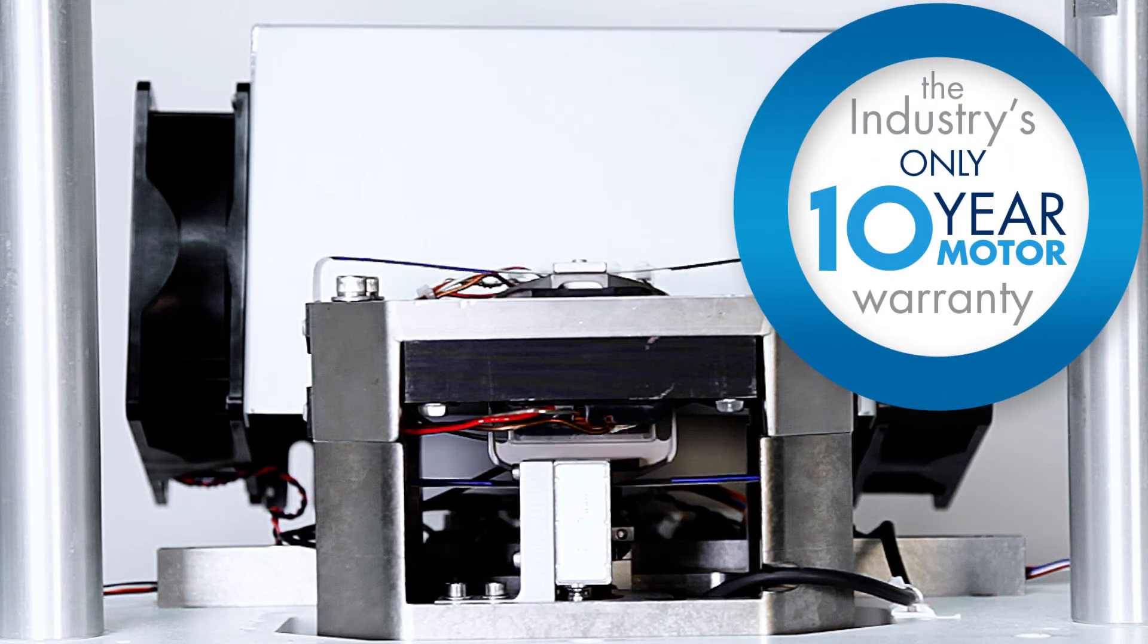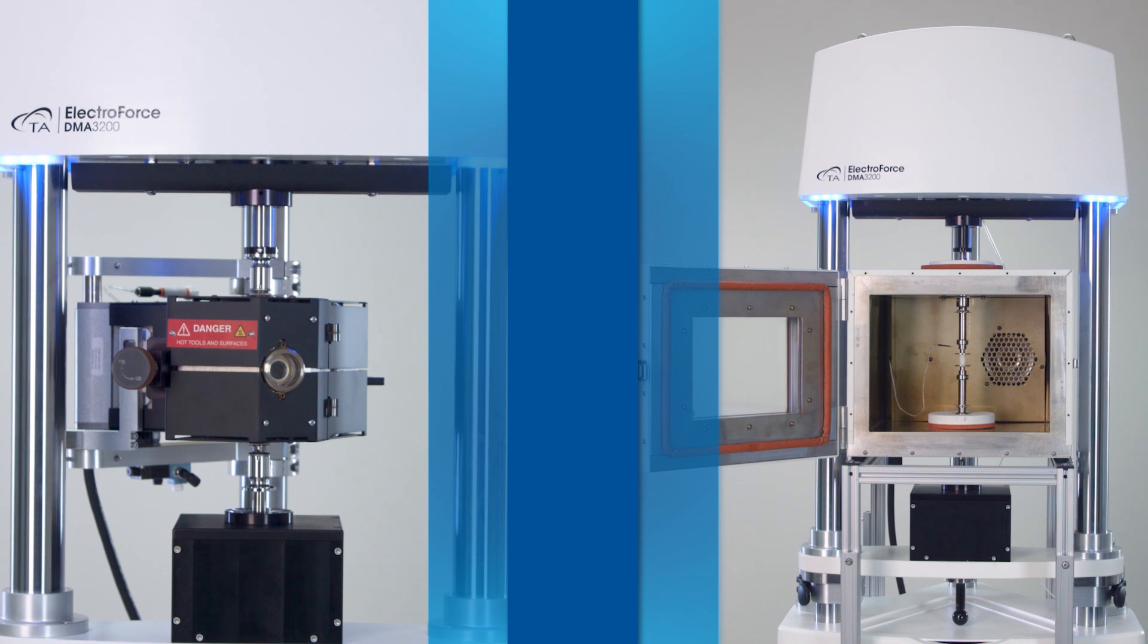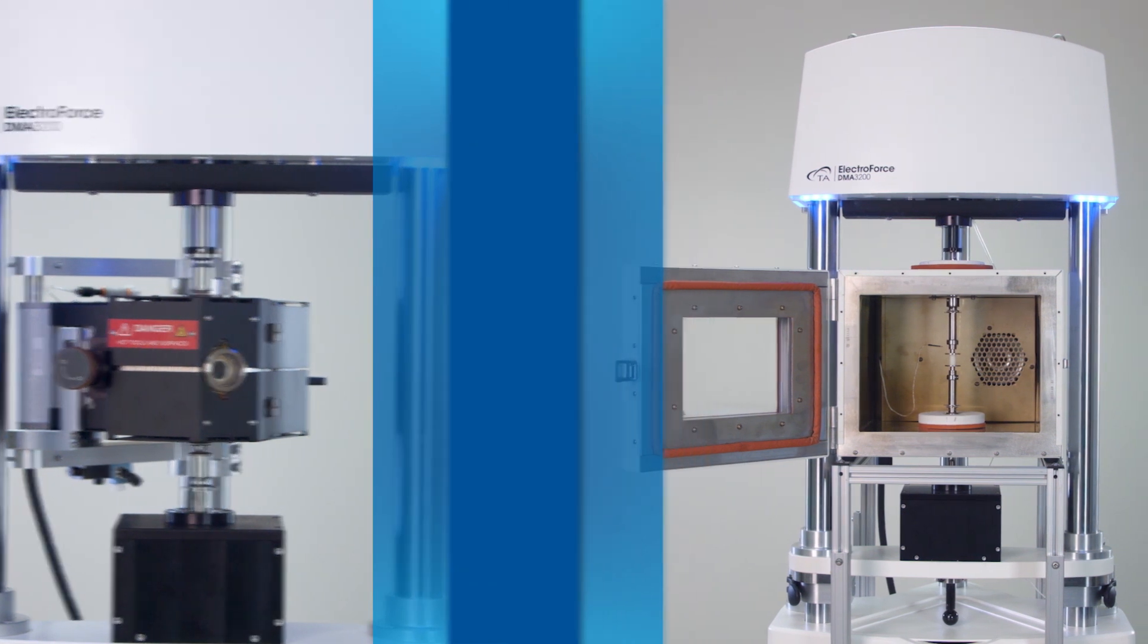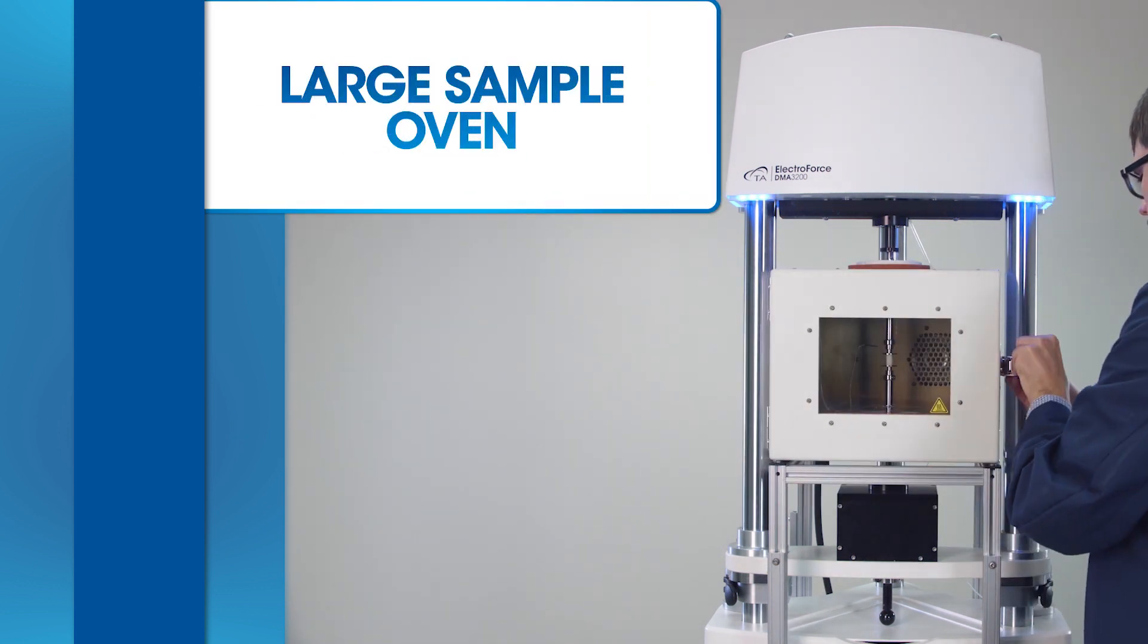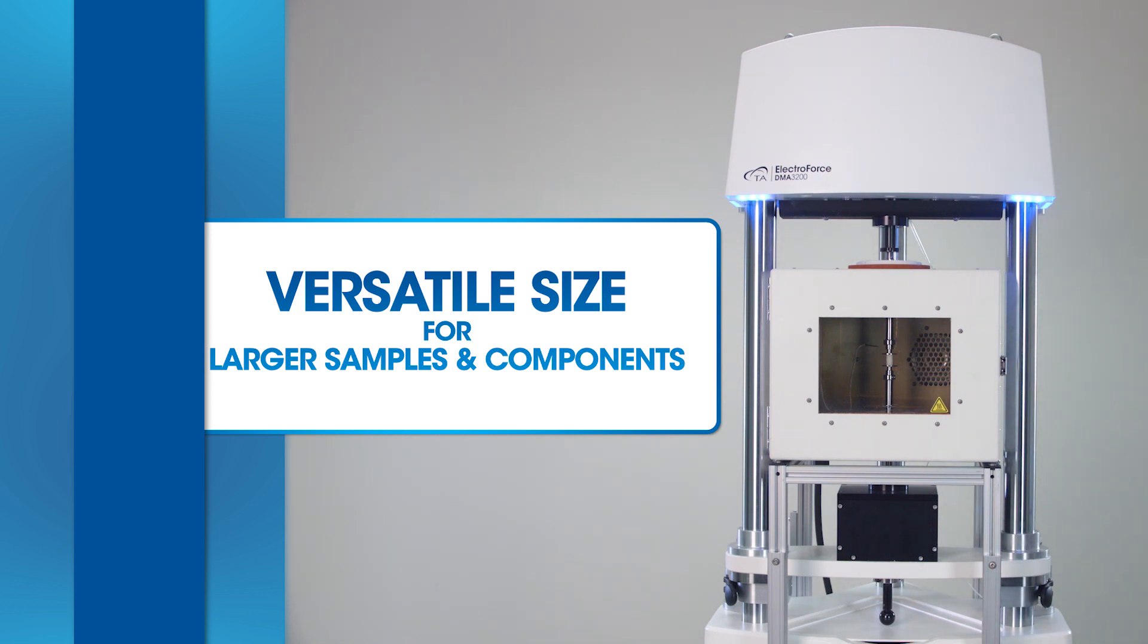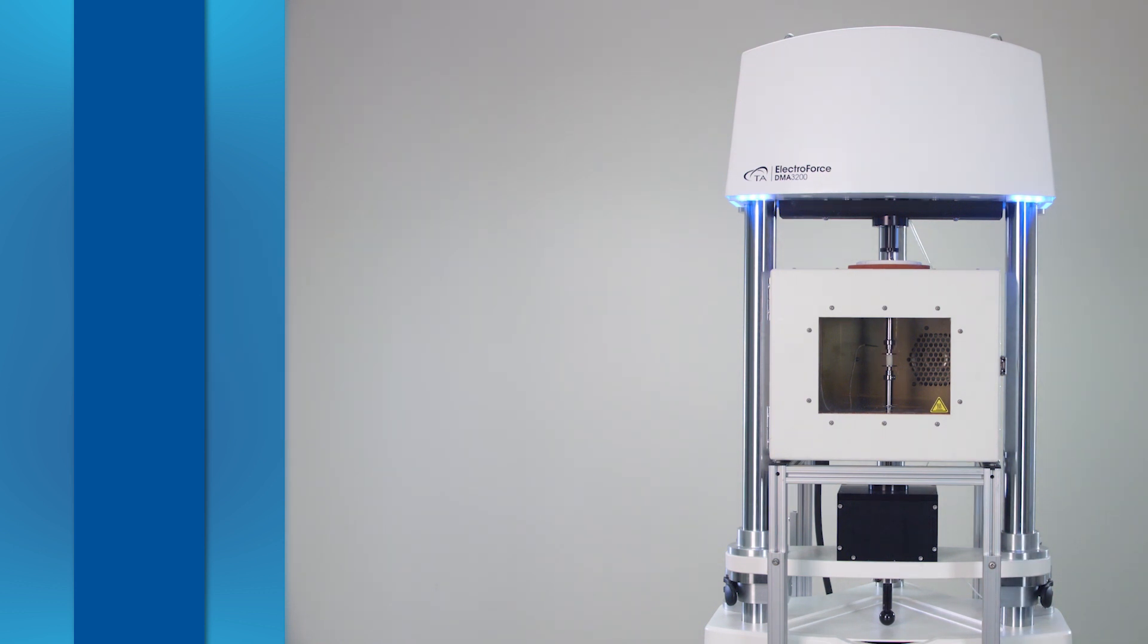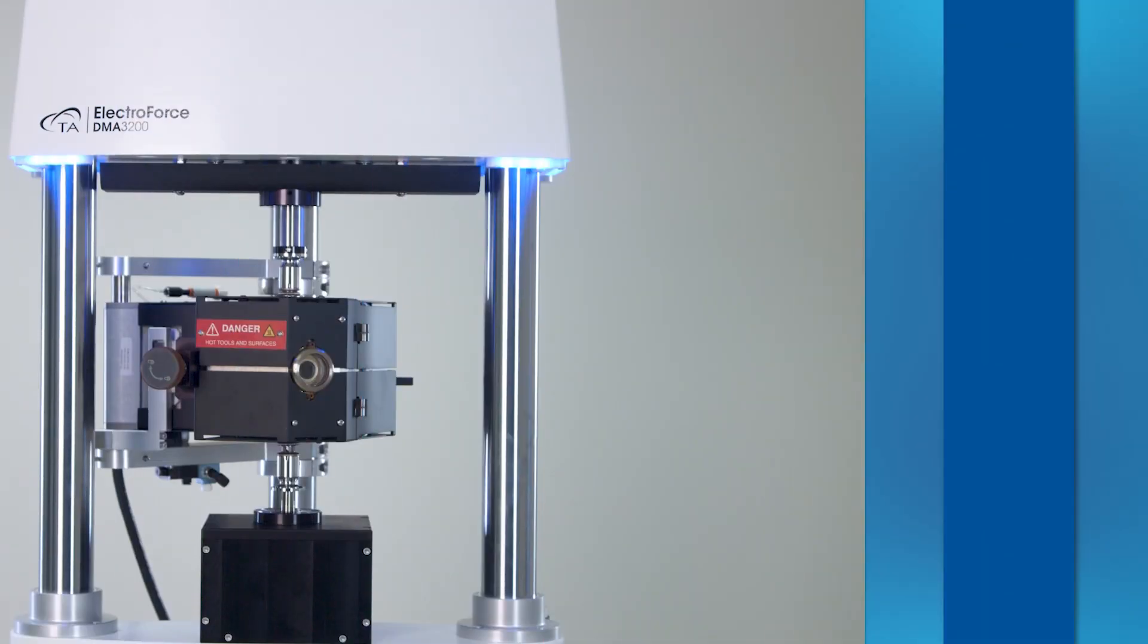The versatile DMA 3200 offers two oven options to enable a wide variety of temperature-based experiments. For larger samples or complete component testing, the LSO oven grants a spacious interior with a capable temperature range of negative 150 degrees Celsius to 315 degrees Celsius.